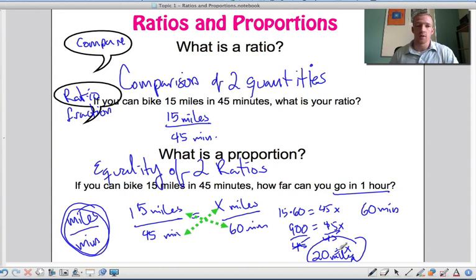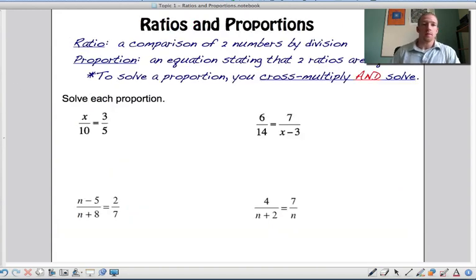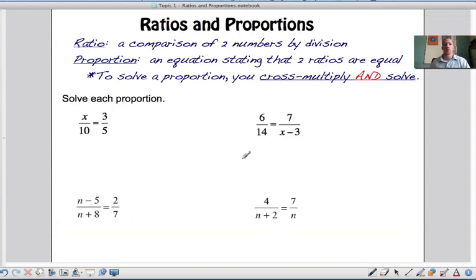So here, ratios and proportions. Ratio is just comparison of two numbers by division. So think fraction. This is going to be important in our next unit too when we do linear equations because we're going to be comparing two things many times. So you cross multiply and solve. You may have heard cross multiply and divide, but that only works sometimes. Cross multiply and solve is the way I want you guys to think of that.